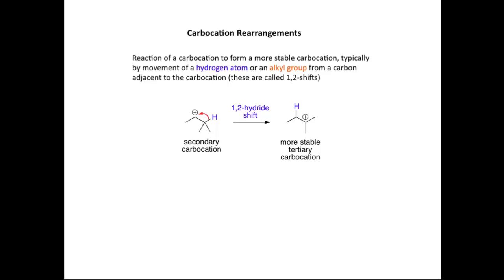Here's an example of a 1,2-hydride shift, where we start with a secondary carbocation. The hydrogen shifts to the neighboring carbon, exchanging positions with the positive charge, which moves to this position. This is the product from the 1,2-hydride shift — we go from a secondary carbocation to a more stable tertiary carbocation.